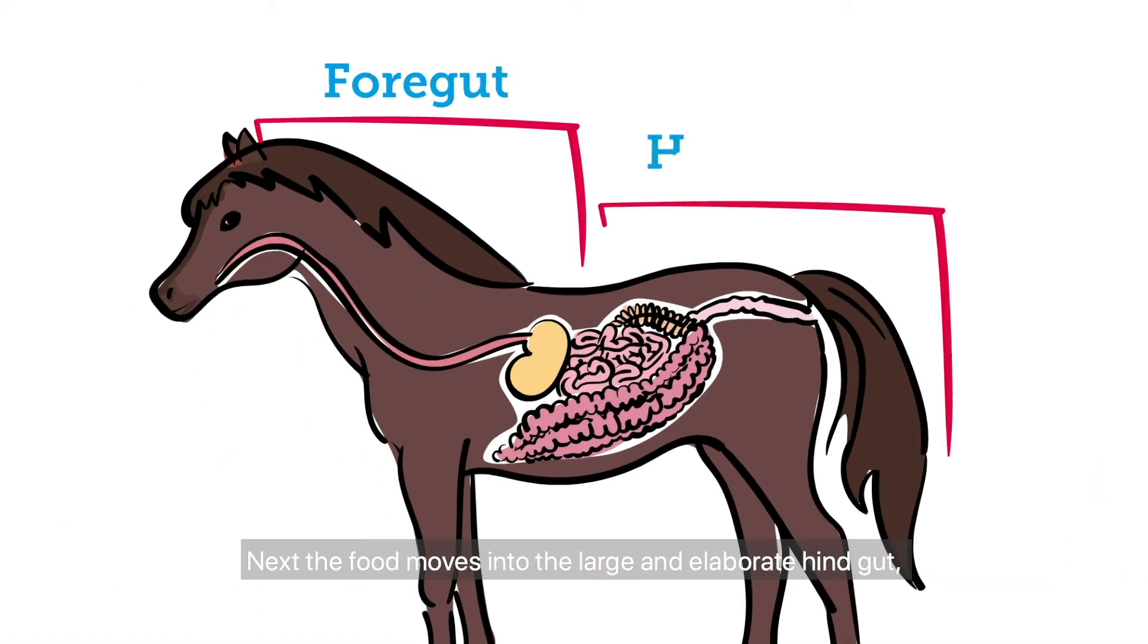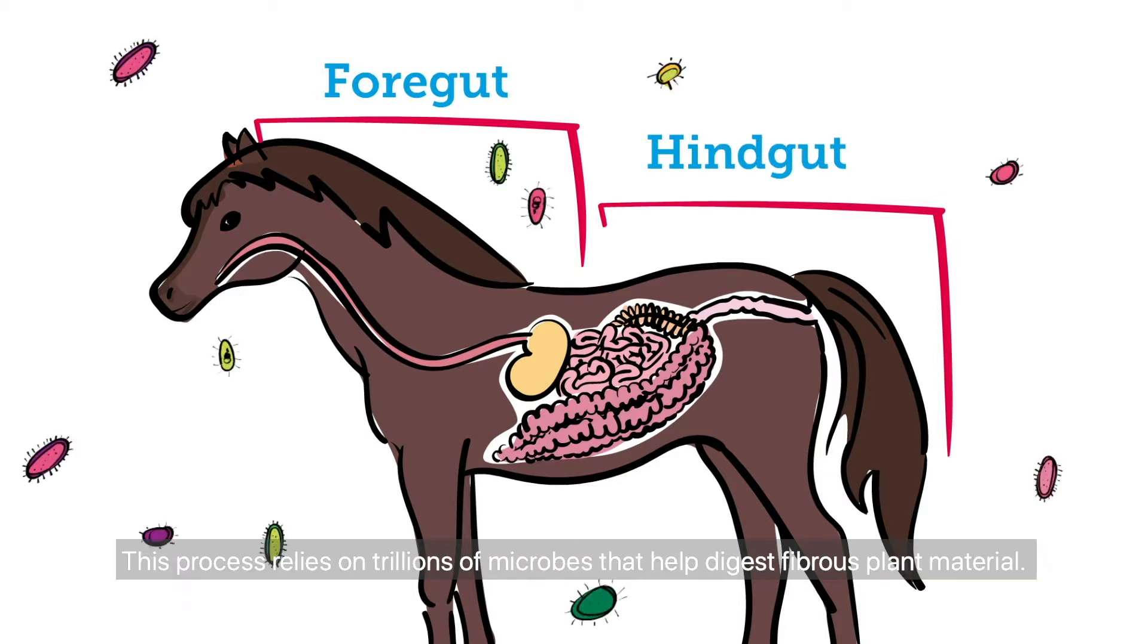Next, the food moves into the large and elaborate hindgut, where it is fermented to extract more nutrients. This process relies on trillions of microbes that help digest fibrous plant material.